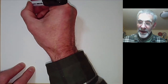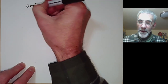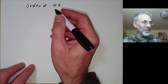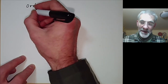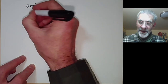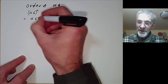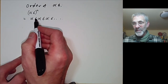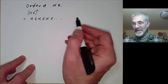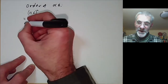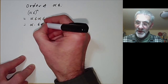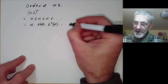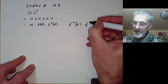The thing to do is work out the order of the linear transformation alpha times sigma. It turns out to have order dividing n. To see this, compute (alpha sigma)^n: this equals alpha times sigma(alpha) times sigma²(alpha) and so on, times sigma^(n−1)(alpha), times sigma^n.